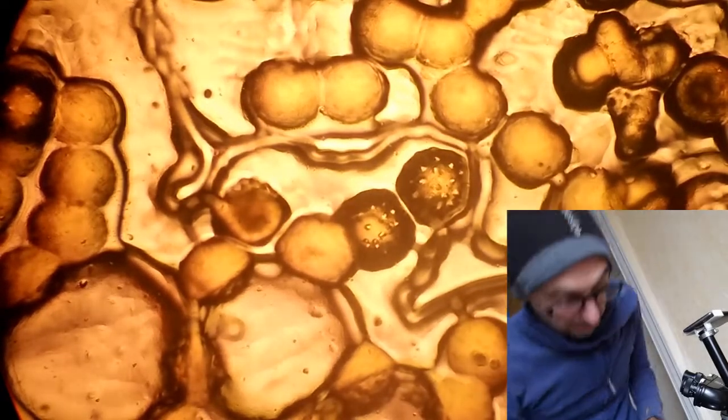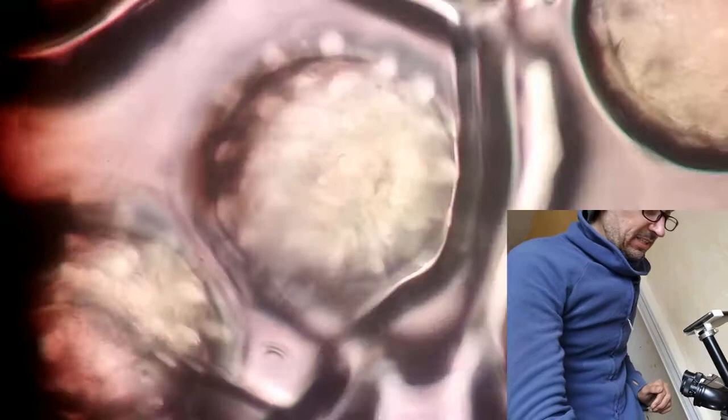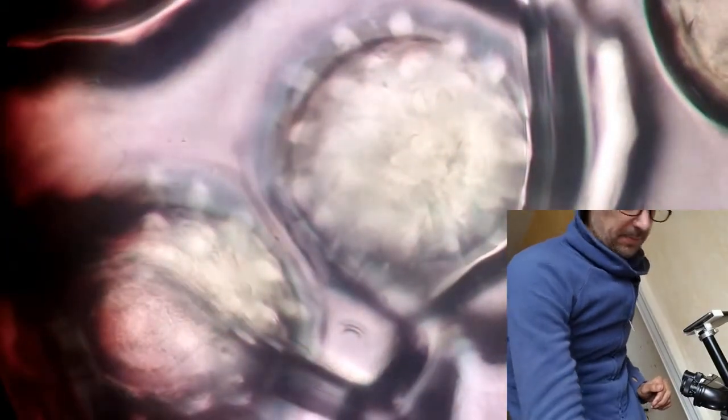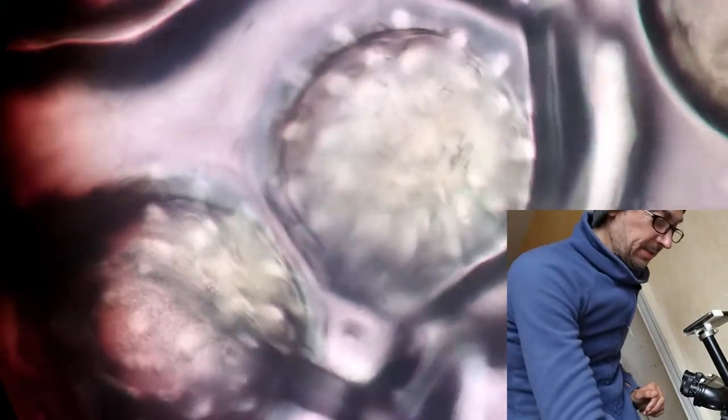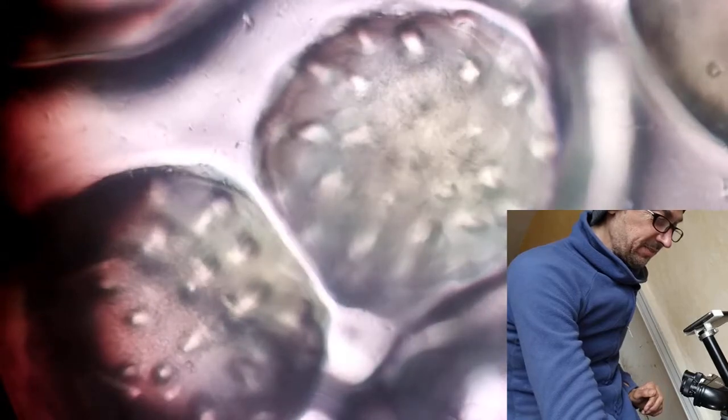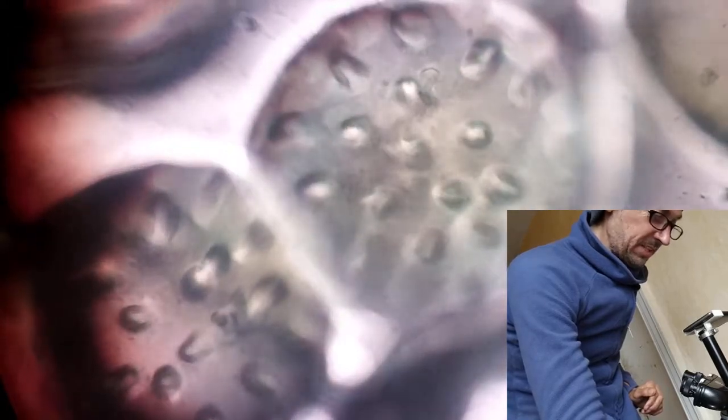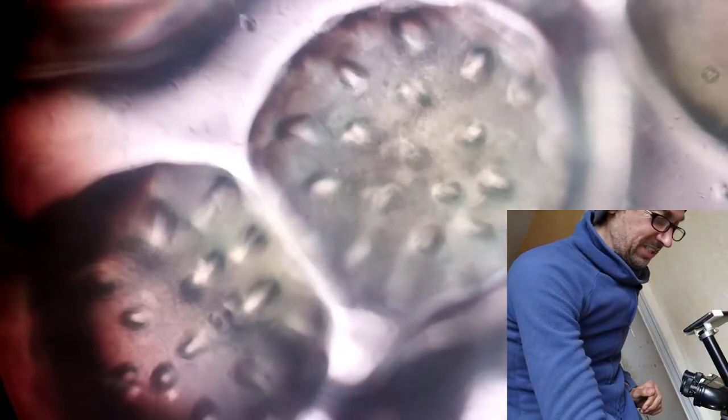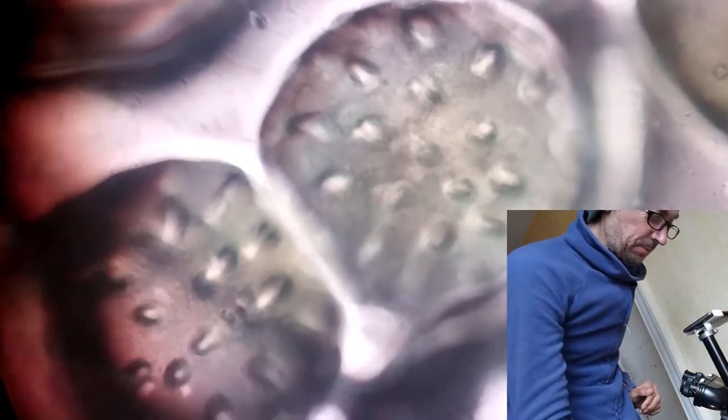Now we go to 40x - that's 400x total magnification. Let's try to get this very sharp. You see now the spikes become really more clear, but it's still a ball with spikes.